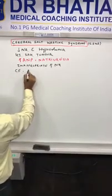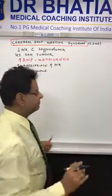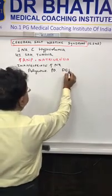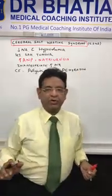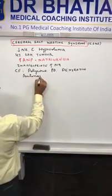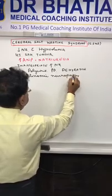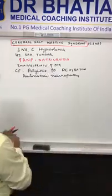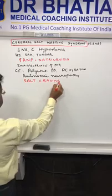That leads to dehydration as well as hyponatremia. The clinical features include polyuria, and due to polyuria the patient has polydipsia. Dehydration occurs as the intravascular volume is reduced, and the patient has features of autonomic neuropathy.